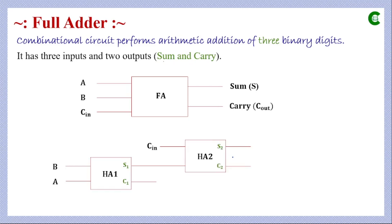A full adder can be represented using two half adders. In the first half adder, inputs A and B give sum = A XOR B and carry = A AND B. This sum is then taken as one input of the second half adder, with C-in as the second input. The final sum of the full adder is the XOR operation: A XOR B XOR C-in.